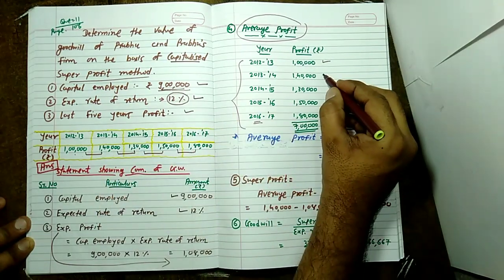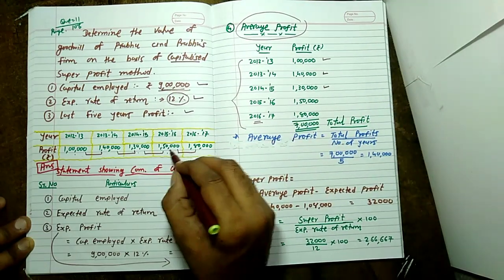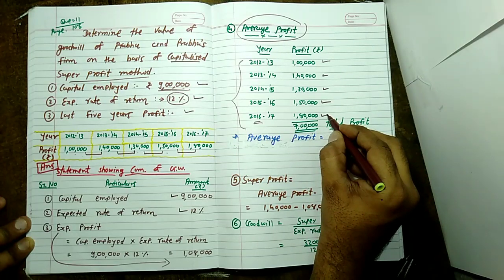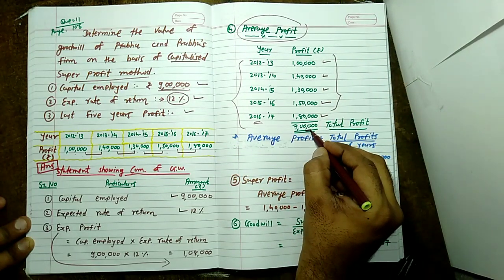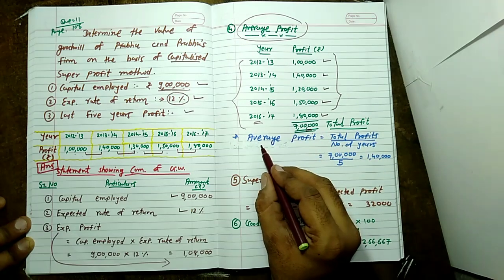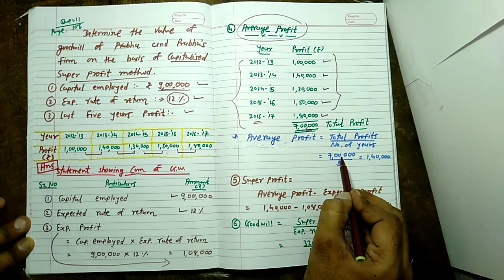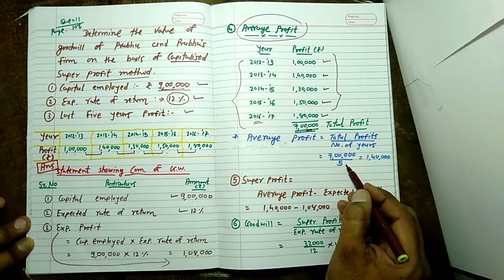1 lakh 40,000, 1 lakh 30,000, 1 lakh 50,000, 1 lakh 80,000. Total profit 7 lakh. Number of years: 1, 2, 3, 4, 5 equals 5. Average profit: 1 lakh 40,000.